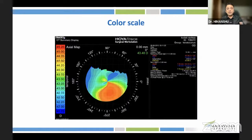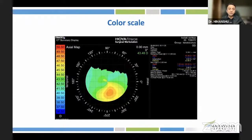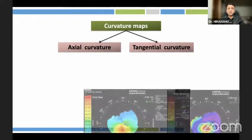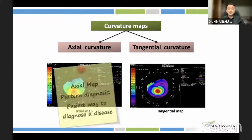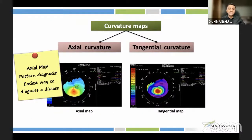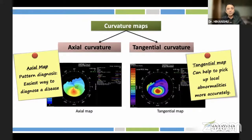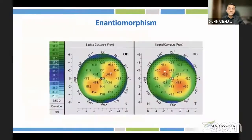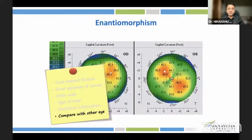The color scale changes the way topography looks, so it's very important to know which color scale you are using. Also, the axial curvature map versus the tangential curvature map can make the same cornea look very different. The axial map gives you pattern diagnosis in an easy way, while the tangential map gives you more localized abnormality detection. Also, enantiomorphism — where most typical topographies have mirror images — is imperative to check when reviewing both eyes; keep both topography printouts side by side.